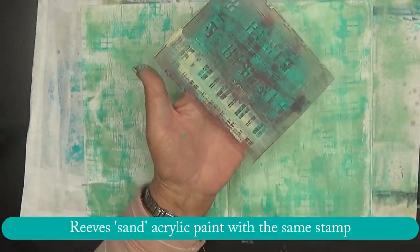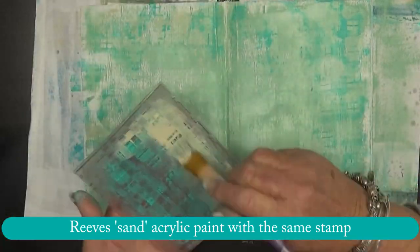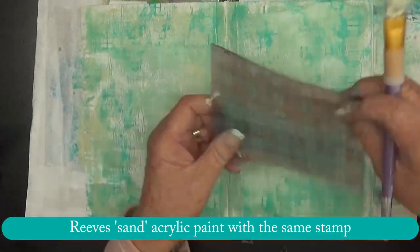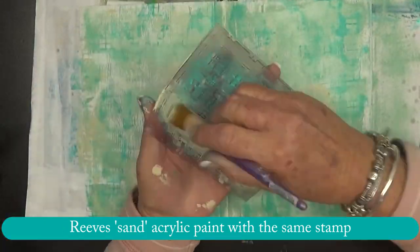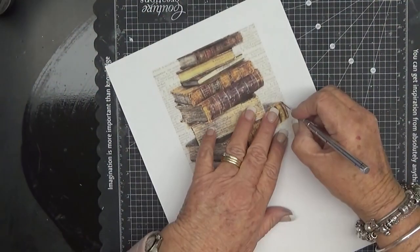So I'm doing the same, I'm stamping it with some sand acrylic paint. Now I'm pretty much with some exception to the border, that's it for the background.